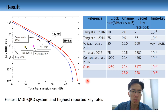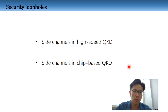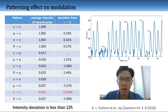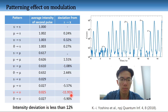The above result hasn't considered all the security loopholes arising in our high-speed chip-based MDI QKD. So next, I want to talk about some of them and discuss their impacts on the security of the system. They are the side channels occurring in the high-speed implementation and the side channels in the chip-based system. The first issue related to the high-speed system is the pattern effect — the correlation between pulses. The effect can appear both in the intensity modulator and the polarization modulator. We test the intensity correlation between adjacent pulses and calculate the deviation for each intensity.